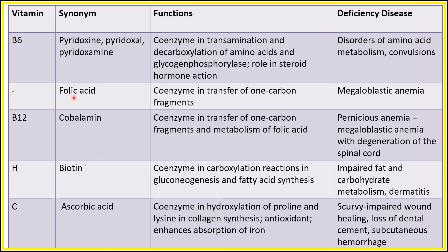Next is folic acid — it functions as a coenzyme in the transfer of one-carbon fragments. Its deficiency causes megaloblastic anemia. Next is Vitamin B12, cobalamin — its function as a coenzyme is in the transfer of one-carbon fragments and metabolism of folic acid.